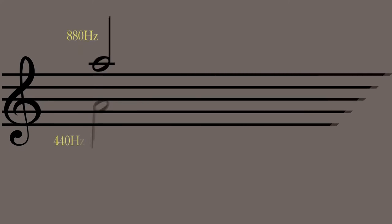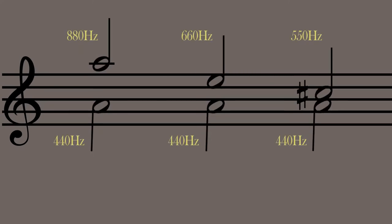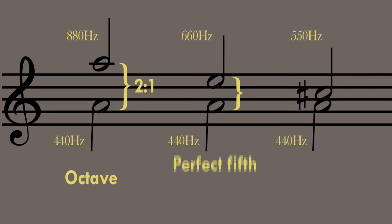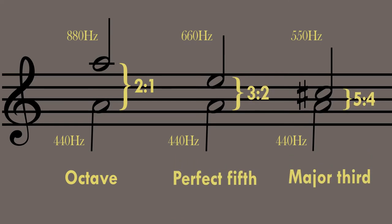In physical terms, a musical interval is the ratio between two sonic frequencies. For example, any two notes an octave apart have a frequency ratio of 2 to 1, while a perfect fifth would have a 3 to 2, and a major third a 5 to 4 ratio.